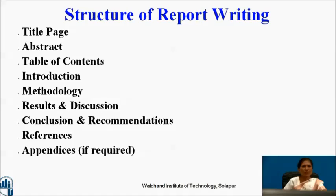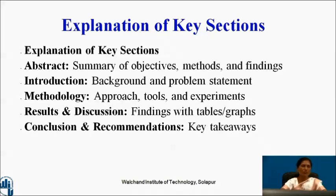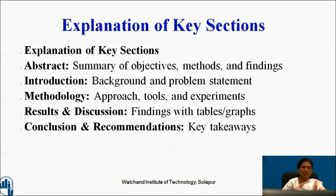This is a circle and structure of report writing. Title page. Abstract is given here — in short, what is your problem statement or the challenge statement, what you will find out, and how you are going to do it. Then table of contents, introduction, methodology, results and discussion, conclusion, recommendation, references, and appendices if required. This is the explanation about the key sections or key terms — the terminologies you are using or the sections for explanation of your report. That is a technical report. Abstract: summary of objective, methods and findings in brief, written in a precise style. Then introduction: background and problem statement. Methodology: which approach or type of methodology you are applying. Results and discussion: findings with tables and graphs. Conclusion and recommendation: key takeaways.